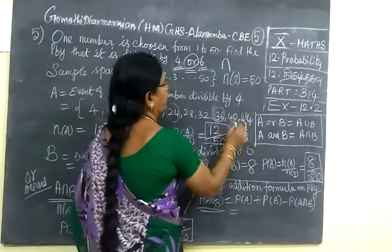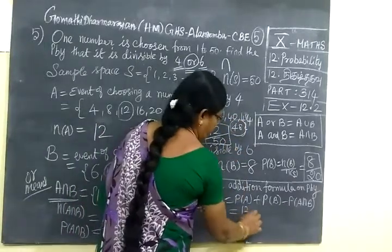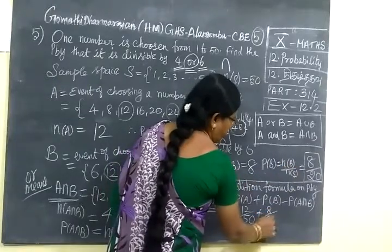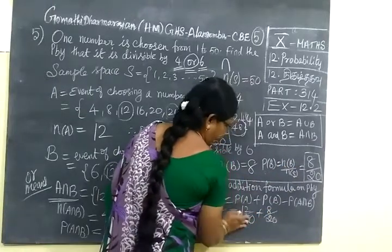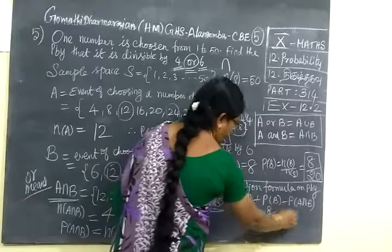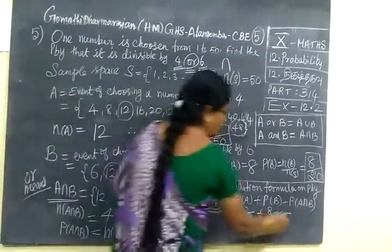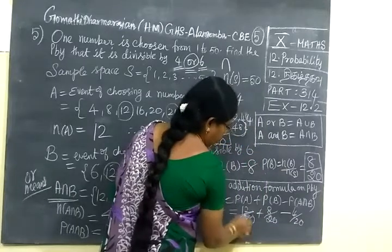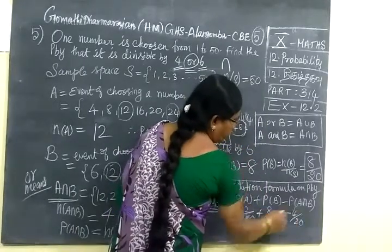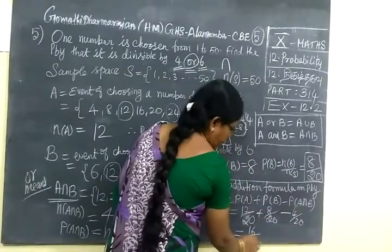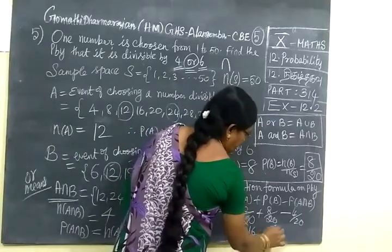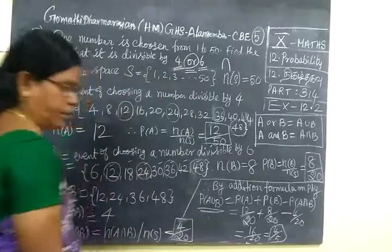P of A union B equals 12 by 50 plus 8 by 50 minus 4 by 50. So equal to 12 plus 8 is 20, minus 4 is 16, by 50. If you cancel, you get the answer as 8 by 25.